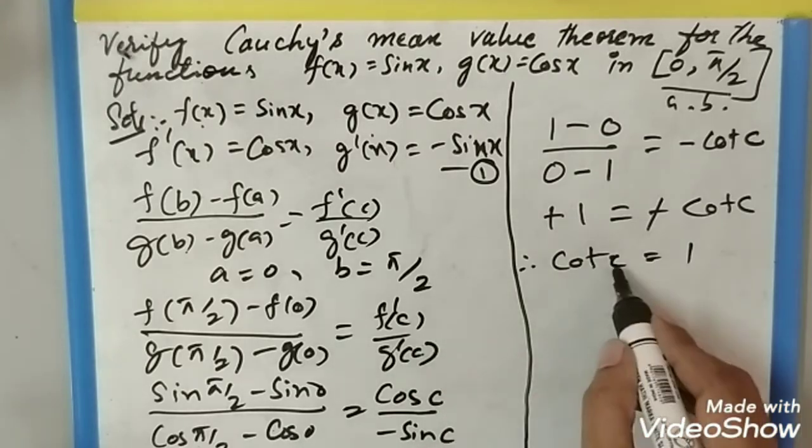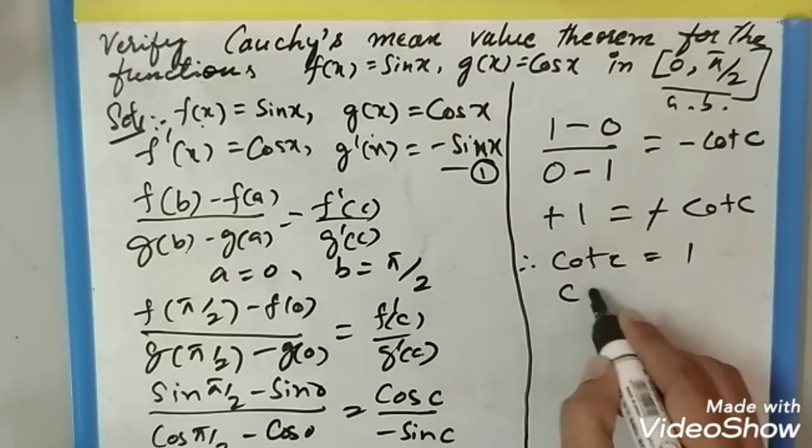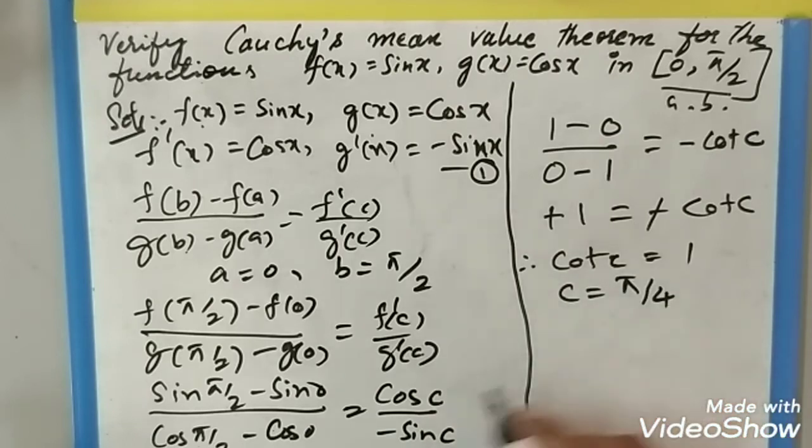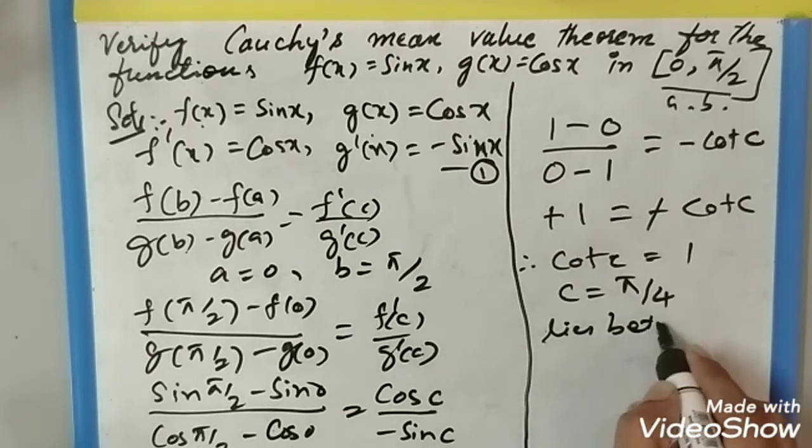When will the angle c equal 1 in the case of cot? That is clearly c = π/4, which lies between our interval 0 and π/2.